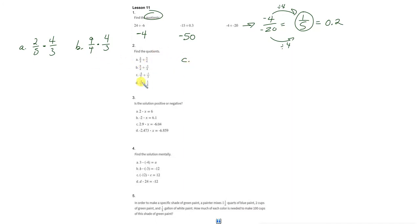C. Keep negative 5 sevenths. Change to multiplication by the reciprocal of negative 1 third, which would be negative 3 over 1. And then D. Keep negative 5 thirds. Change to multiplication of the reciprocal of 1 sixth, which is 6 over 1. Now, let's get to the work.